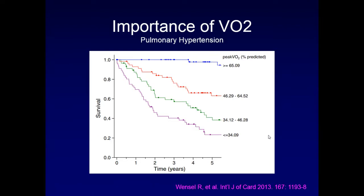In pulmonary hypertension the same conceptual thing occurs. Looking at predicted VO2 in a study by Wenzel using percent predicted: if you have a measured VO2 greater than 65% predicted, survival looks good at five years. As you drop to 45%, 35%, or less than 35%, you see significant drop-off in outcomes. So VO2 is a nice way of measuring how well survival-wise people are going to do over time.